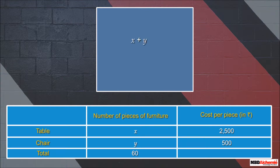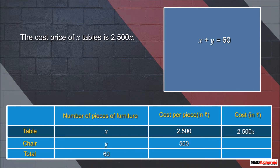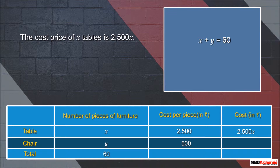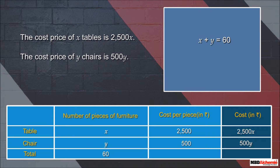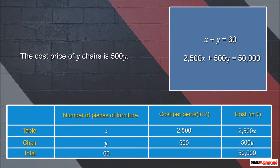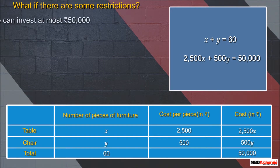According to the given information, the first equation is: x + y = 60. Since the cost price of each table is 2,500 rupees, the cost price of x tables is 2,500x. Since the cost price of each chair is 500 rupees, the cost price of y chairs is 500y. Therefore the second equation is: 2,500x + 500y = 50,000.